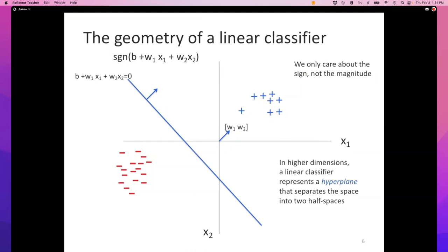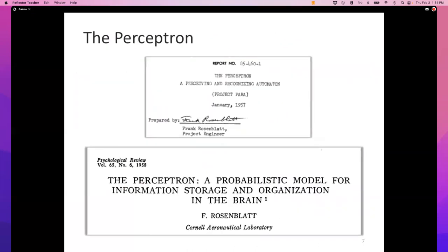Everyone knows what a linear classifier is, and we can start proving theorems about them. The perceptron algorithm was introduced in this paper by Frank Rosenblatt from 1958. I like the title: 'The Perceptron: A Probabilistic Model for Information Storage and Organization in the Brain.' I wish I had the confidence to write such titles.